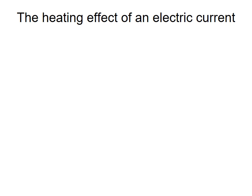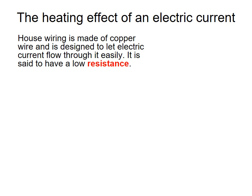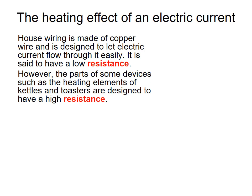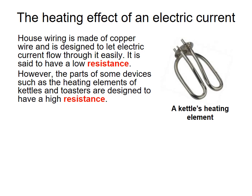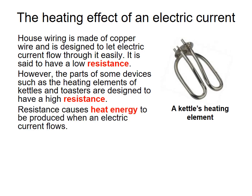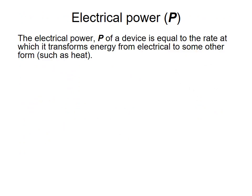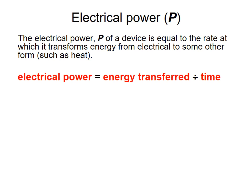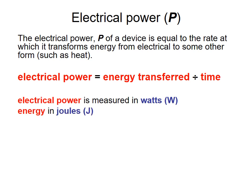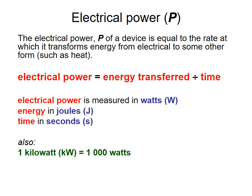When current passes through a wire it feels warm. House wiring is made of copper and has low resistance. However, some parts of devices have high resistance, which leads to heating — for example, a kettle heating element. The greater the resistance, the hotter the element becomes. Electrical power, P, equals energy transferred divided by time. It's measured in watts, energy in joules, and time in seconds. Remember: 1 kilowatt equals 1000 watts, 1 megawatt equals a million watts.